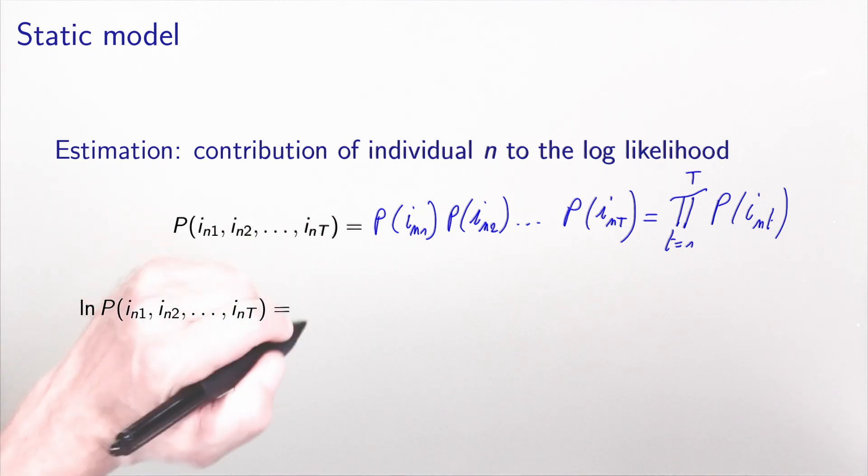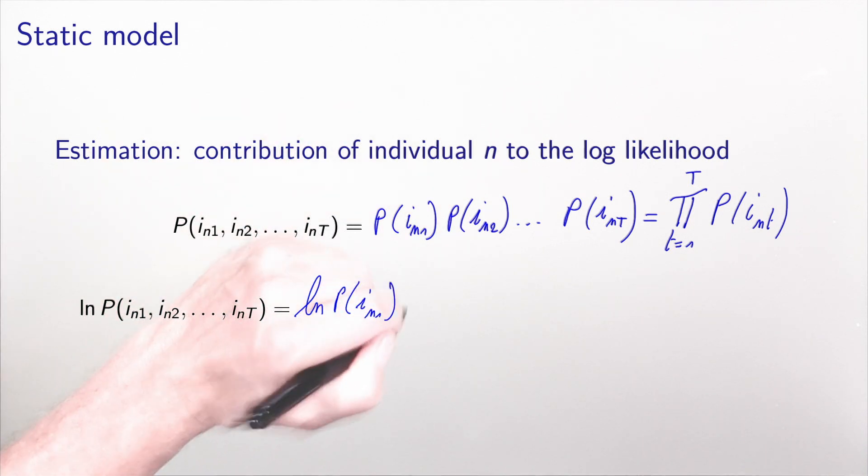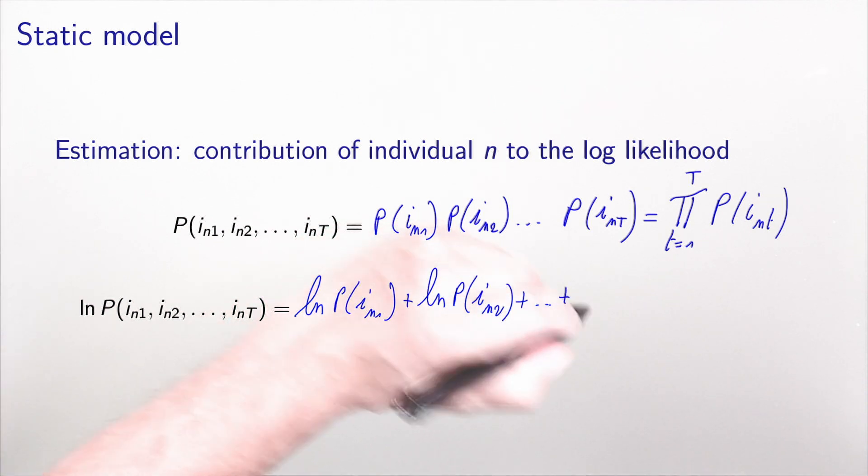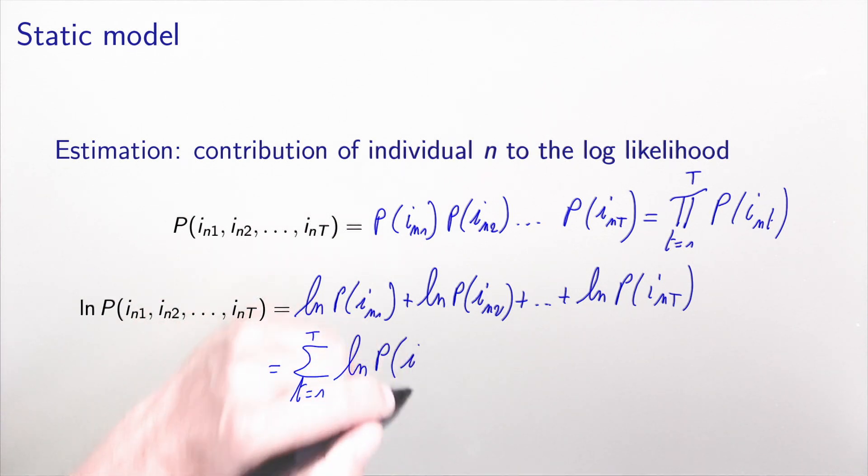When you take the log, the log of the product becomes the sum of the log. This is straightforward. What we do here is to consider panel data as just additional data in a cross-sectional setting. We don't exploit at all the fact that they are related with time. It's extremely simple, which makes the analysis very simple as well, but it has limitations.